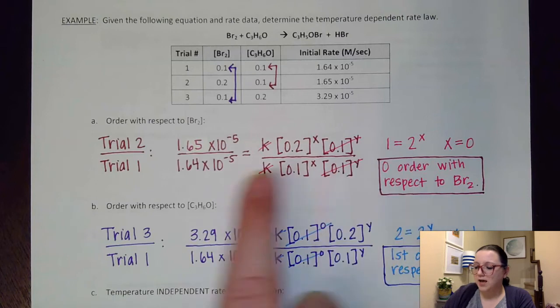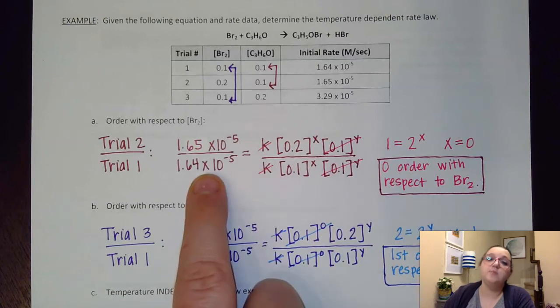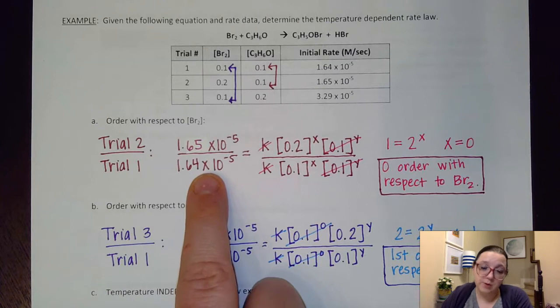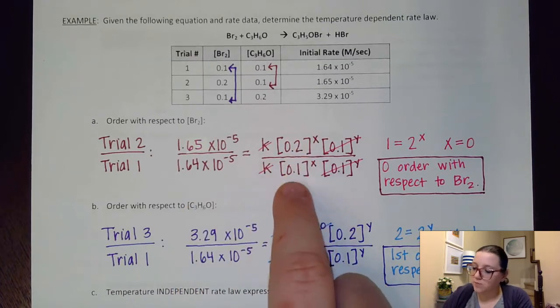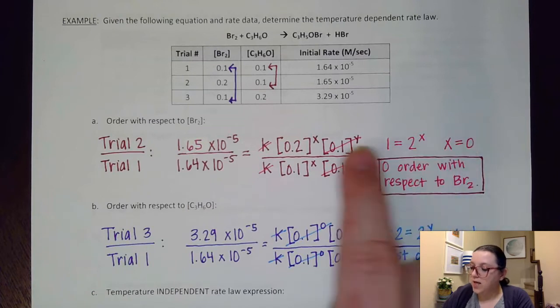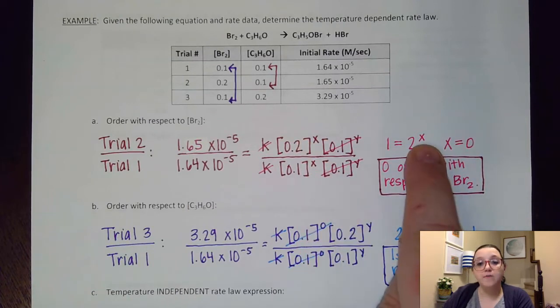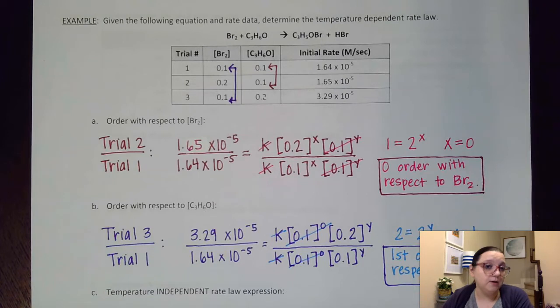But I would then solve this math right here, which got our value really close to 1. I know it's not exactly perfect, but remember this is experimental data. And so experimental data is not always on the nose perfect. 0.2 over 0.1 would give me 2, and that would be raised to an order of x. And so then I want to figure out what x would be.